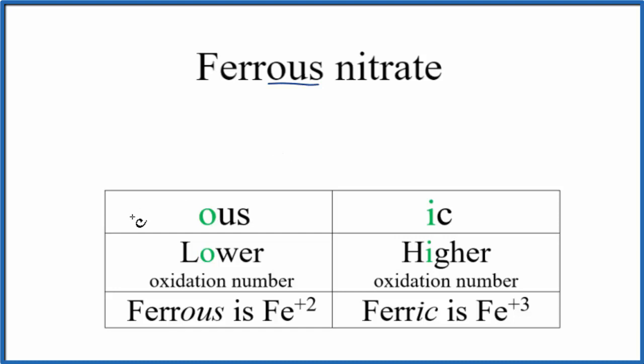the 'ous' ending. This means we have the lower oxidation number. Iron can be +2 or +3, and since it's 'ous' we'll choose the lower one, Fe²⁺. So we have Fe²⁺, also called the iron 2 ion.